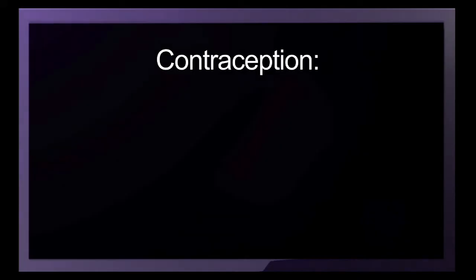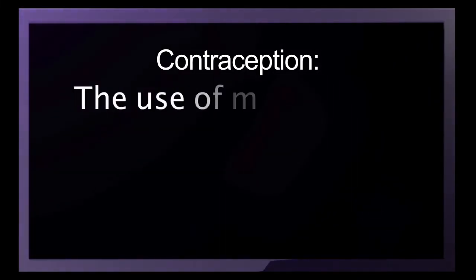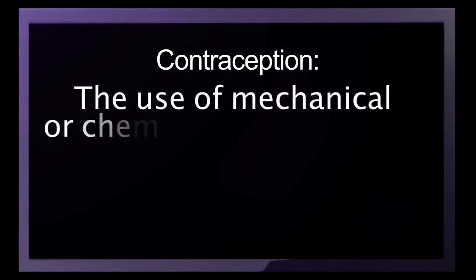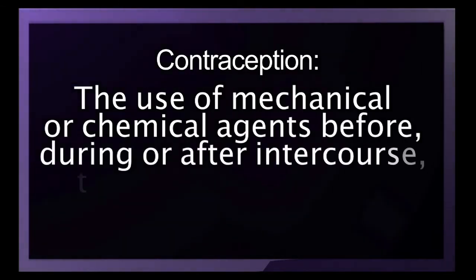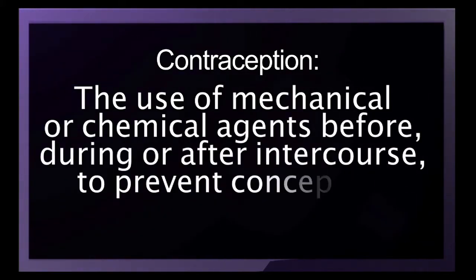First, let's define some terms. Contraception is the use of mechanical or chemical agents before, during, or after intercourse to prevent conception. Here we will discuss the different methods of contraception, their mechanism of action, effectiveness, and side effects.